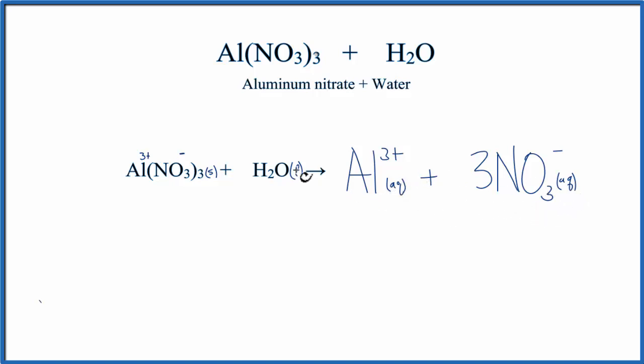Because they're aqueous, we don't need to write H2O again on this side. We're done. This is the equation for aluminum nitrate plus water.